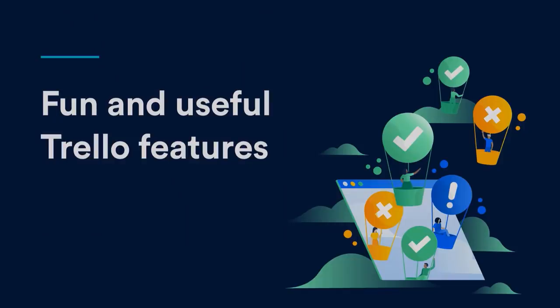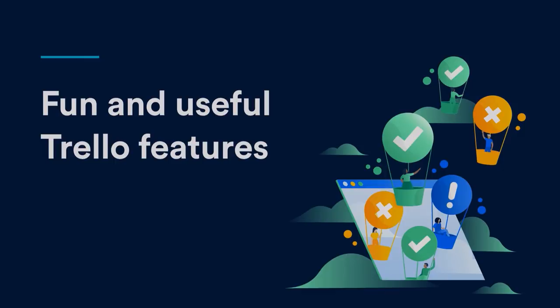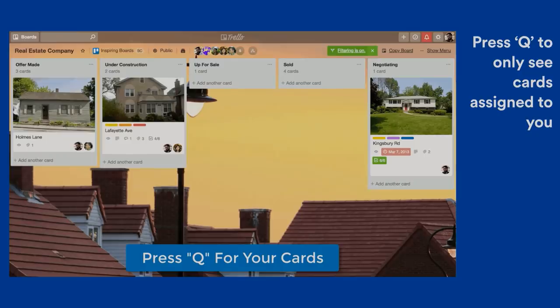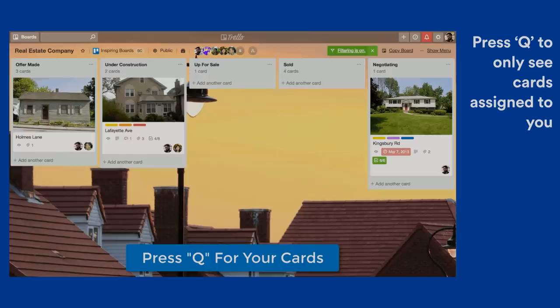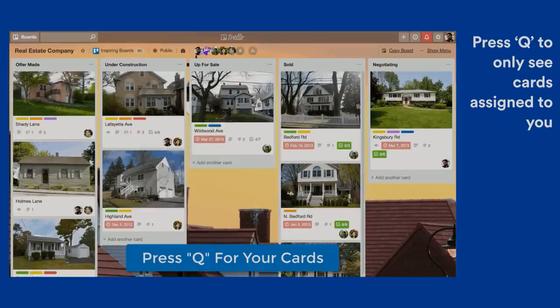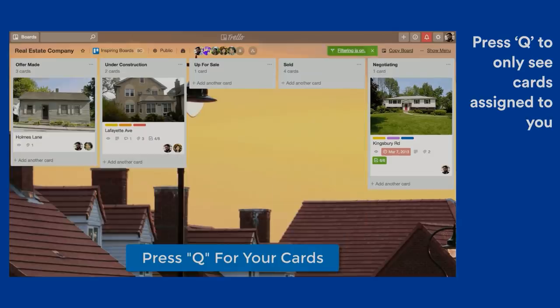It's time for the lightning round of some of my favorite features that make Trello more useful, faster, and visually clearer — and also just fun. Trello has a ton of keyboard shortcuts, but my personal favorite is the letter Q. If you're hovered over a board, all you do is press Q — especially on these busy boards — and it shows only the cards that are assigned to you. This is amazing because it really cleans things up. There are boards where we have tons of cards and all I need to see are mine. The way I remember it: Q is for you.